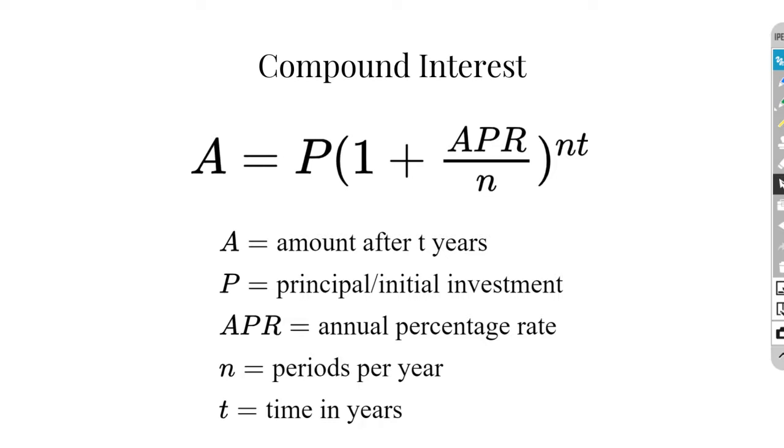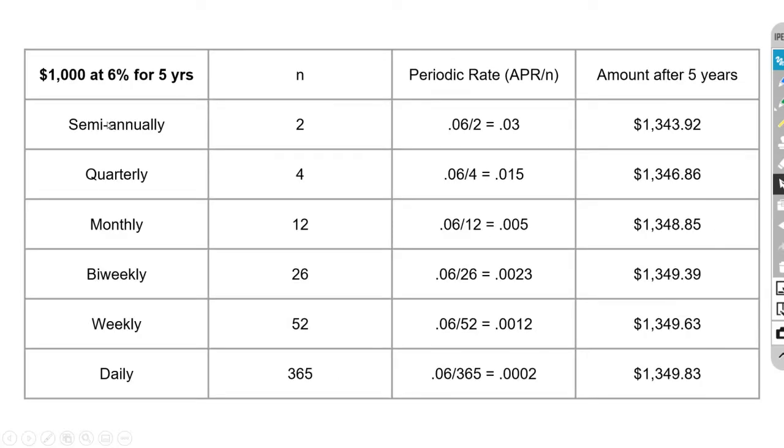Now depending on the type of account you have, our interest can be compounded at a different frequency. So some accounts are compounded semi-annually, some are compounded monthly, some maybe even daily. But what is most important for us to understand is that the more times you compound, the more money will accrue.